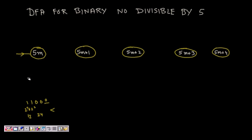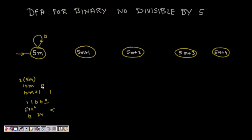If the current number is of the form 5m and we append a 0, it becomes 10m, which is still divisible by 5 — so we remain in the same state. If we append a 1, it becomes 10m+1, and since 10m is divisible by 5, the remainder is 1, so we go to the state for remainder 1.